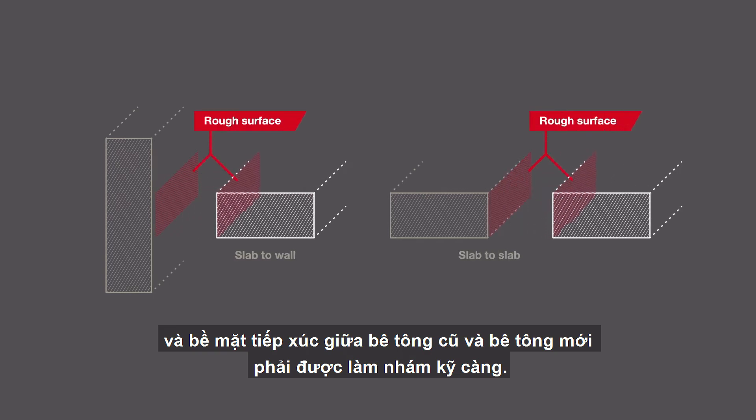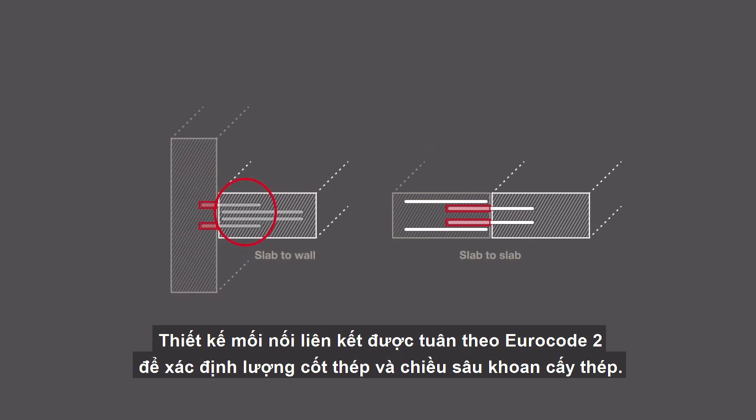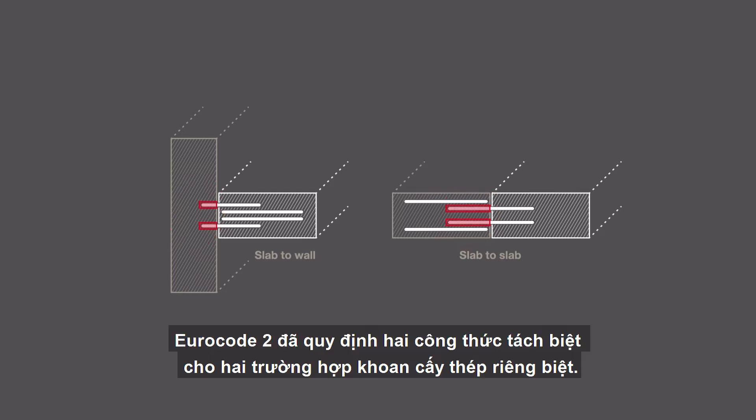The design of the system connection is based on Eurocode 2 to determine the amount of reinforcement required and the design anchorage length. Eurocode 2 specifies two formulas for the anchorage length for two different applications.